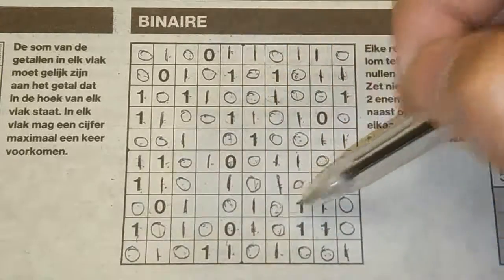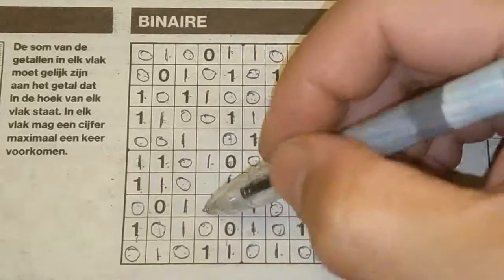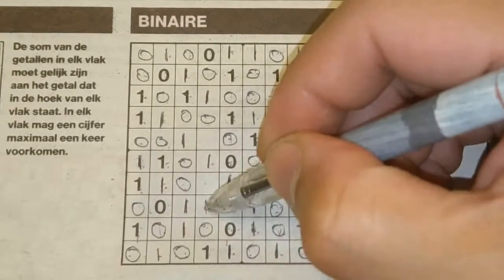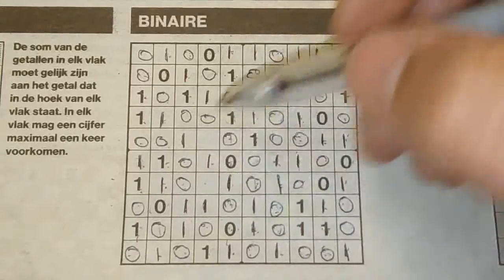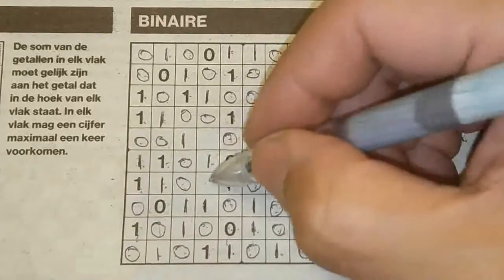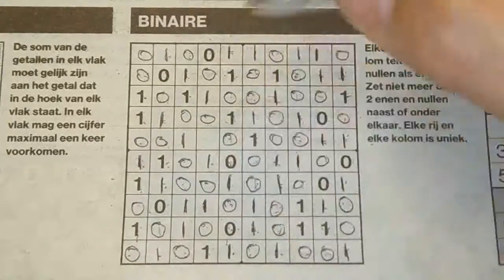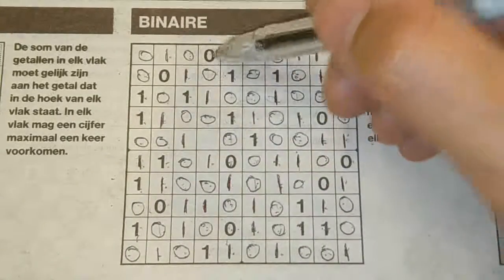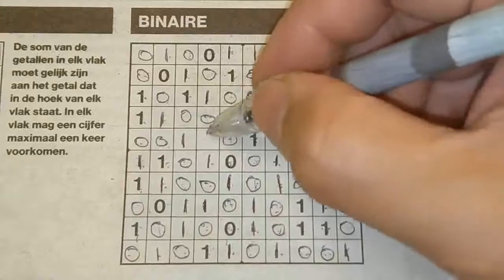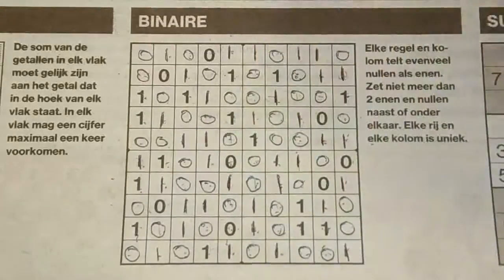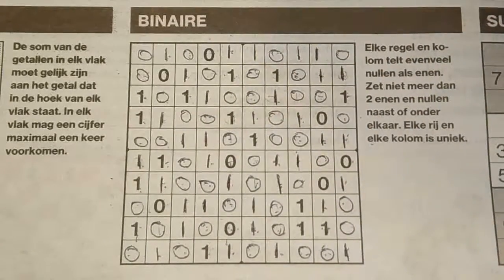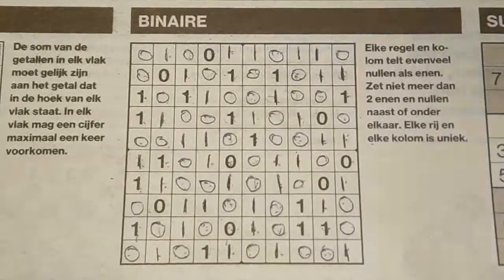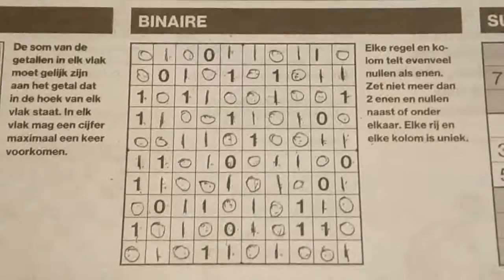One, two, three, four, five — five O's, so this must be a one. Between two ones comes an O. One, two, three, four, five — so the rest are ones. So we have finished this binary in 8 minutes.